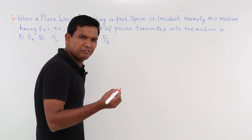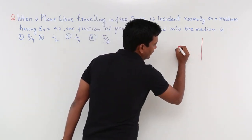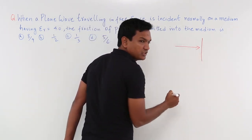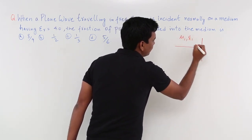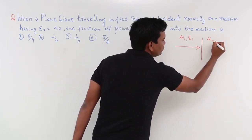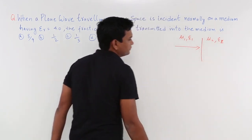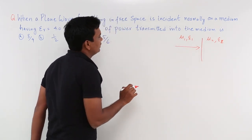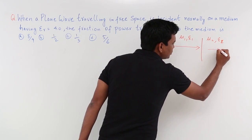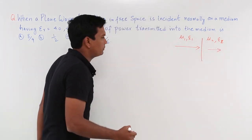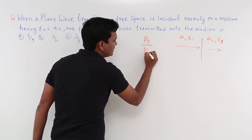If I visualize this, it is something like there are 2 mediums. There is an electromagnetic wave that is normally incident. This is medium 1, with μ₁ and ε₁. This is medium 2, with μ₂ and ε₂. It is a case of normal incidence, so we are asking how much power will actually be transmitted — basically we have to find Pt divided by P incident.